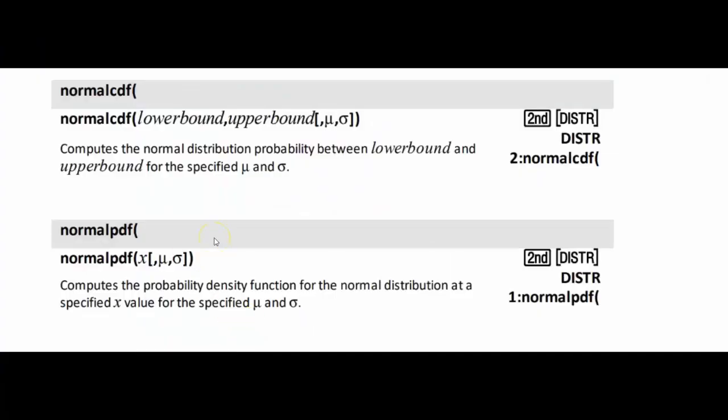As explained in the TI-84 Plus CE reference guide, normal CDF will do continuous data between lower and upper bounds. Whereas normal PDF is normally for discrete data, it will be a probability density function and it gives you a precise value.